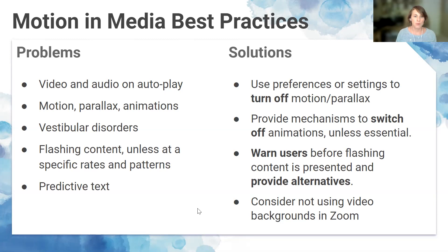Motion, parallax, and animations on the web can make people feel nauseous, dizzy, or give them a headache. For someone with vestibular neuritis — an inner ear disorder that may cause sudden severe vertigo, dizziness, balance problems, nausea, and vomiting — the effect can be much worse and even painful. Flashing content that flashes at a particular rate or pattern can cause photosensitive reactions including seizures and should ideally be avoided or only used in a way that does not cause known risks.